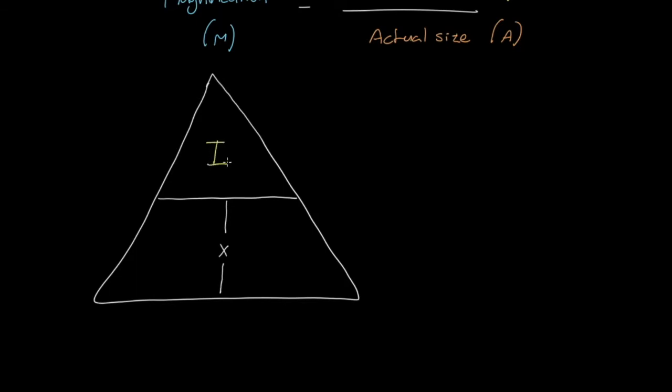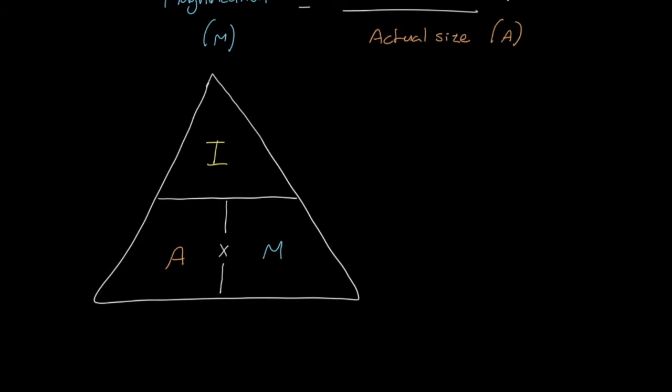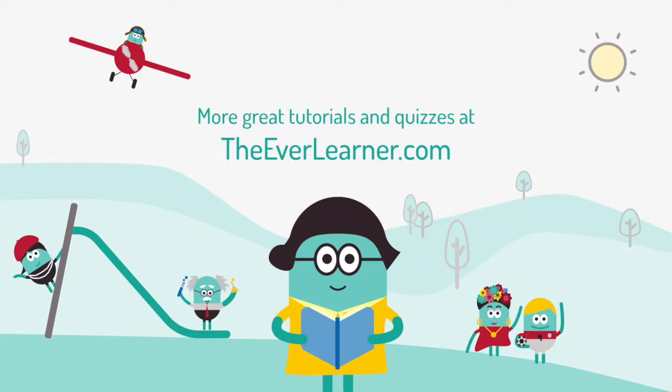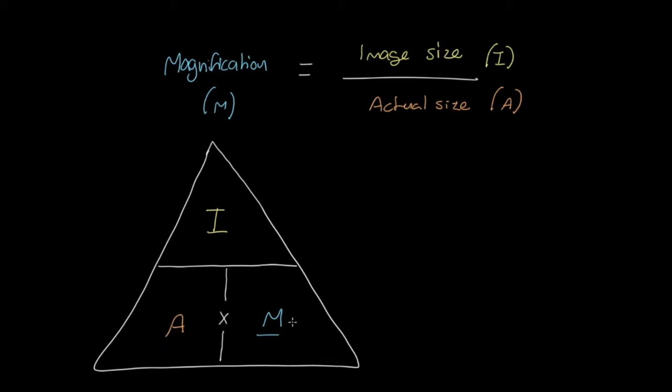I AM. So what we've done there, just to be clear, is we've got image size, actual size, and magnification. So as we've seen in our equation, if we want to calculate magnification, we take image size over actual size. We divide image size by actual size, and we get magnification. If we want to know the image size, we take the actual size and multiply it by M, the magnification. If we want to find out the actual size, we take the image size and divide it by magnification. This continues to work for us really neatly.